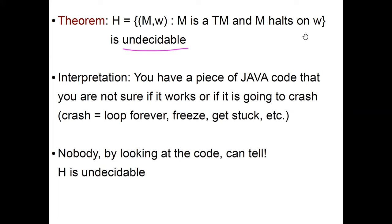This theorem has an important interpretation. If you have a piece of code — say Java code — and you're not sure if it's going to work or if it's going to crash (crash means it loops forever, freezes, or gets stuck), you'd like to check. If compilers and programmers could solve this problem, they would be very happy. However, the bad news is that nobody, by looking at the code, can tell, because H is undecidable.